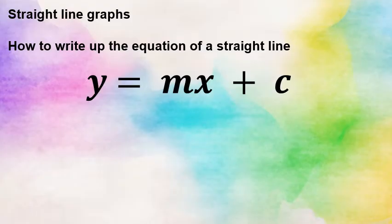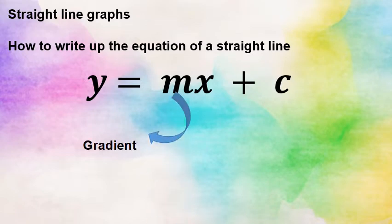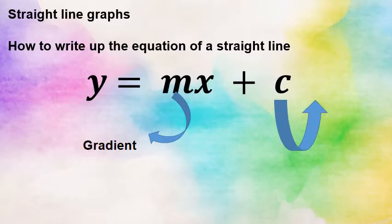First things first, please remember the cookie cutter mold for a straight line is y is equal to mx plus c. That m is for the gradient — if it's a positive gradient it's going to have an increasing graph, and if it is a negative gradient it's going to be a decreasing graph.